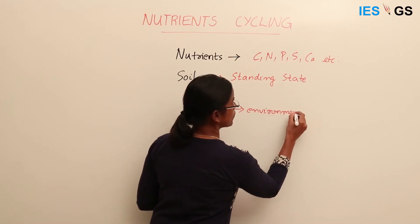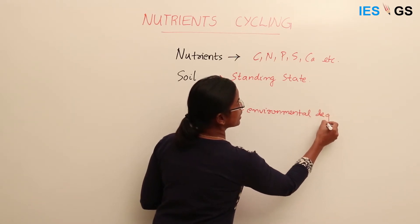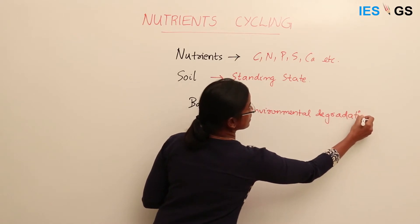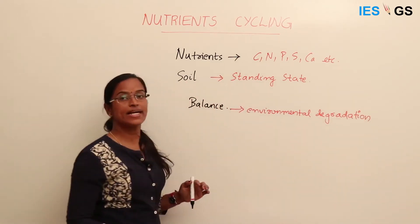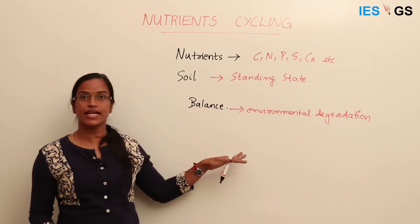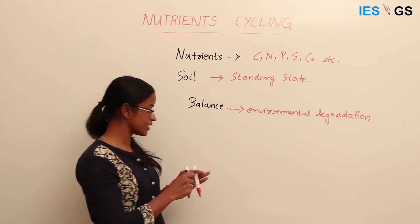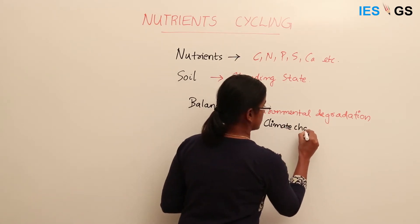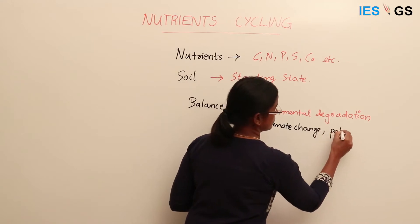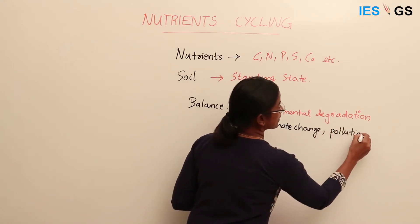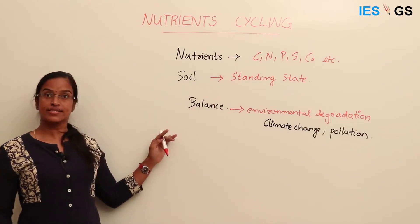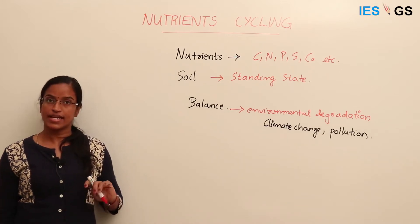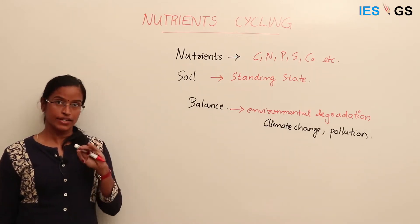When this balance is disturbed, it causes environmental degradation. Many of the environmental problems we see today are related to changes in these cycles — changes mainly in the carbon cycle, which is the main reason behind climate change. Pollution and other problems can also be traced back to changes in these nutrient cycles. So the study of nutrient cycling is very important from an environmental perspective.